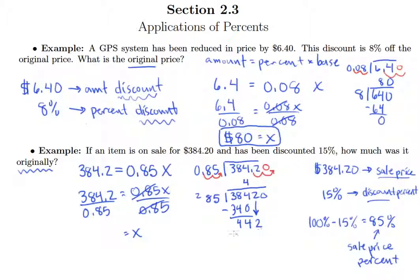Let me drop down our 2. Let's see, 85 is going to go into 442 five times. 5 times 5 is 25, 5 times 8 plus 2 is 42. So we have a remainder of 17. Drop down the zero, and 85 goes into 170 exactly 2 times. So what this means is that the item originally cost $452.